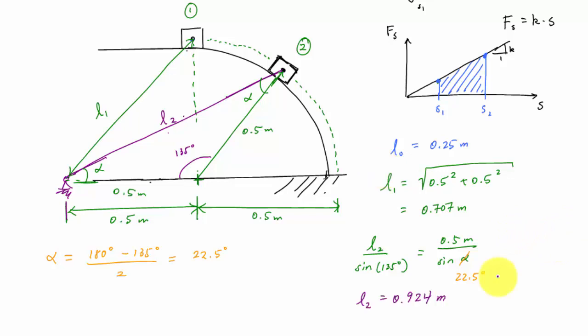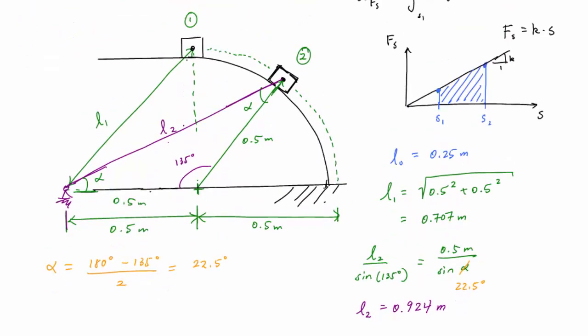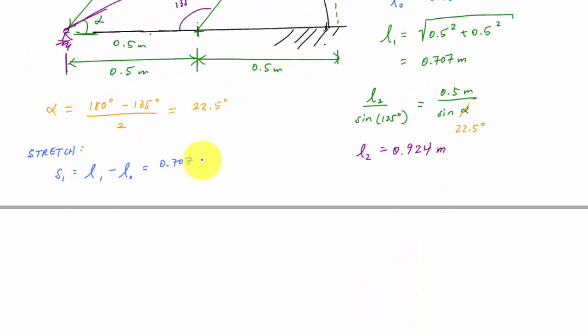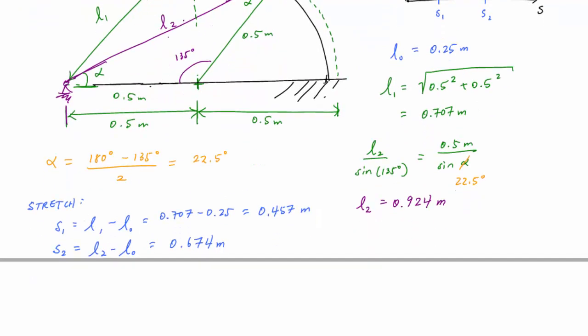So those are the lengths of my springs at stage one and at stage two. The stretch would then be, it would be specifically S1 and S2. So at stage one, when my particle is at one, my string is stretched 0.457 meters. And at two, my spring is stretched 0.674 meters. And so now I can apply that straight into my integral here, this integral right here. I have the spring stiffness. I know what S is.